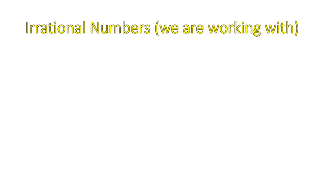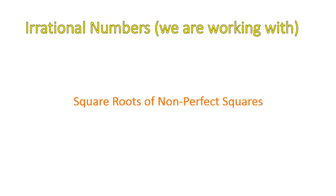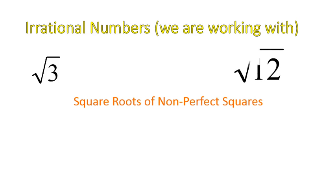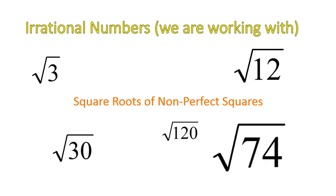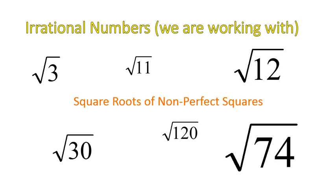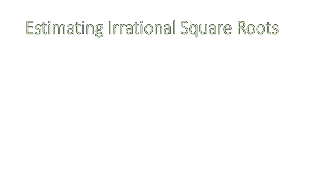The last thing you'll need to know is that we will be working with irrational square roots — square roots of non-perfect squares. Basically, the square root of anything that is not a perfect square is an irrational square root. We'll be working with all three of those things as we get started with our lesson on locating rational and irrational numbers on a number line.